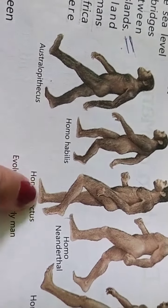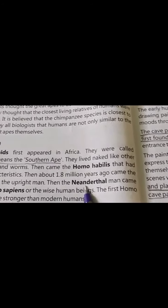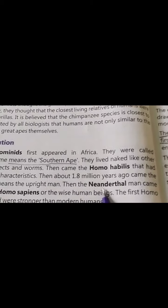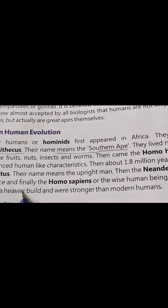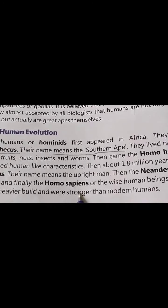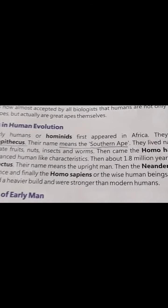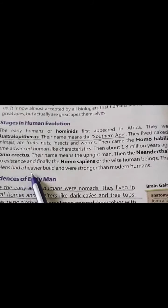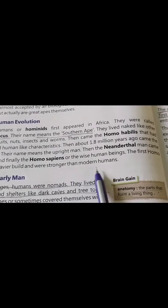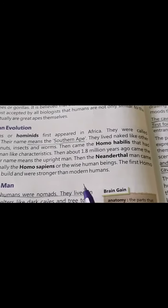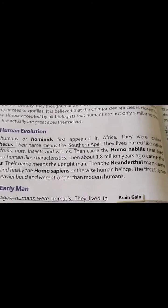You can see the pictures of Homo habilis and Homo erectus from the textbook. Next comes the Neanderthal — Neanderthal man came into existence. And finally, the Homo sapien, which is now what we call a wise human being, which we are right now. The first Homo sapien had a heavier build and was stronger than modern humans.